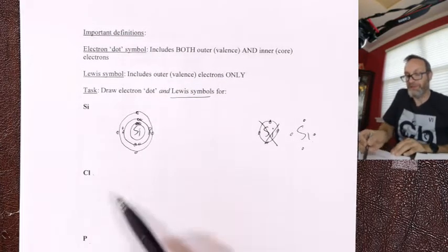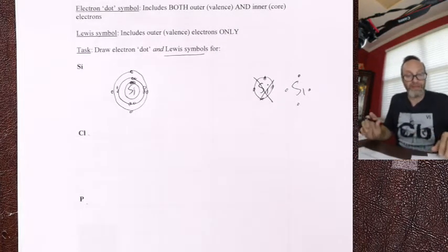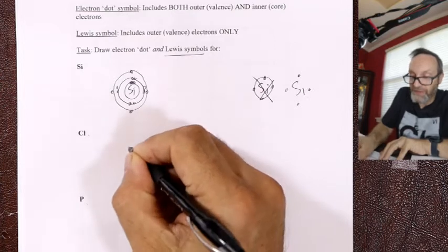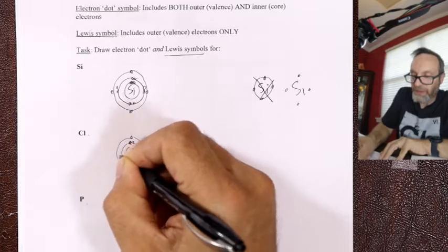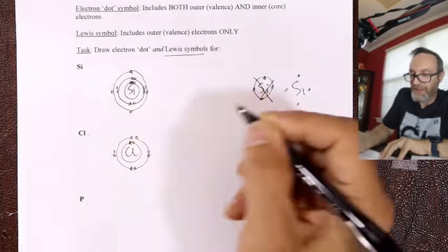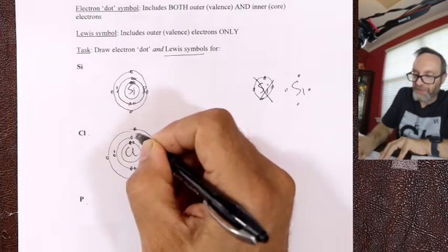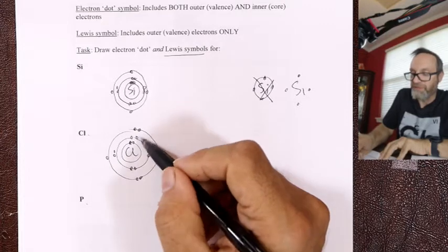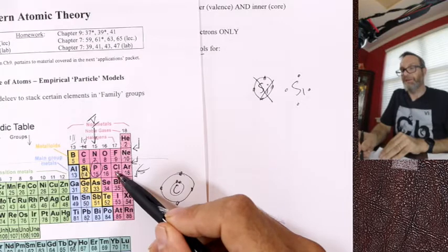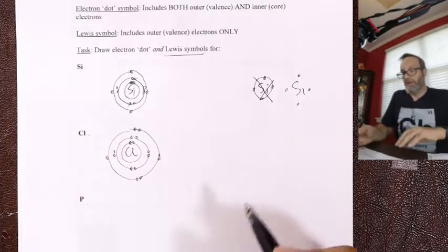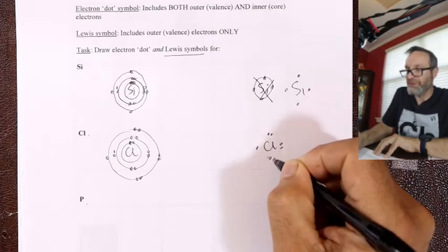Try chlorine and phosphorus — both dot diagrams and Lewis symbols. Chlorine, element number 17: 1 through 10 fills the first two layers; seven more to go. Looking at chlorine in the periodic table — three layers, column seven, seven on the outside. Lewis symbol for chlorine: just seven on the outside — 1, 2, 3, 4, 5, 6, 7.